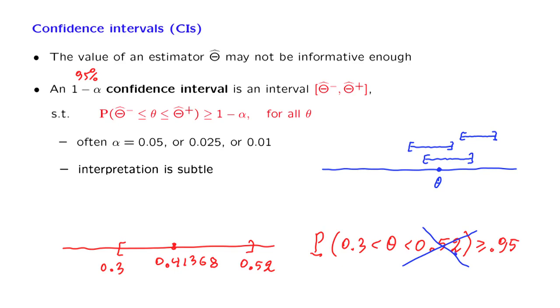So it is important to keep this in mind and to always interpret confidence intervals the correct way. So how does one come up with confidence intervals? The most common method is based on normal approximations, as we will be seeing next.